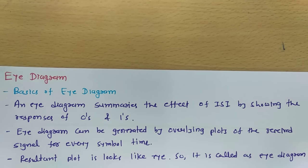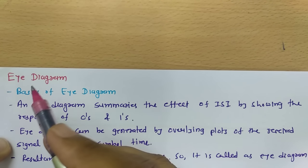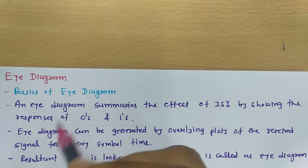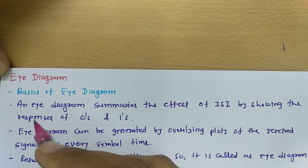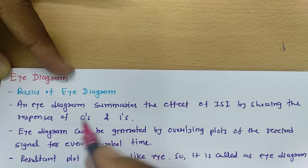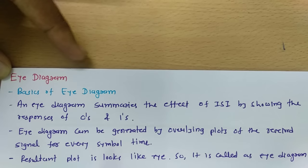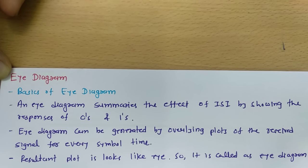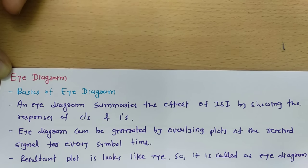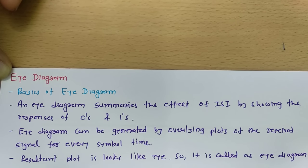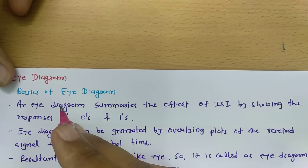Welcome to the digital communication playlist. In this session, I will explain the eye diagram. To do so, first I will cover some basics of the eye diagram, then explain one example of how to get an eye diagram, then explain the basic eye diagram display, and at the end I will sum up the session based on how many parameters we can interpret from the eye diagram. Let us begin with the basics.